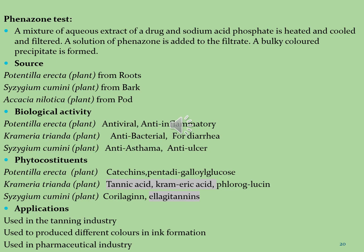Tannins are found in Potentilla erecta roots, Syzygium cumini bark, and Acacia nilotica pods. Biological activities include antiviral and anti-infective activity from Potentilla erecta, antibacterial and antidiarrheal activity from Krameria triandra, and anti-asthma and anti-ulcer activity from Syzygium cumini. Key phytoconstituents present in these plants are tannic acid, primeric acid and ellagitannins.